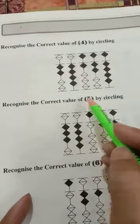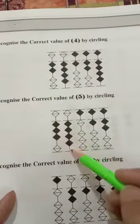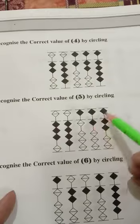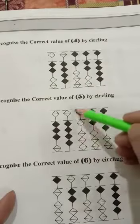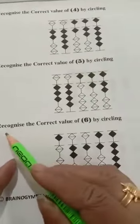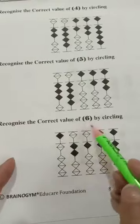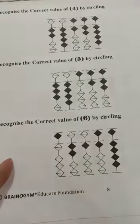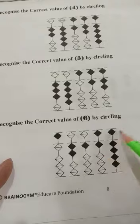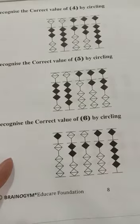Now the correct value of 5. This one is 3, 4, 5, 6 and 7. Then you circle the 5. Recognize the correct value of 6. That means 5, 2, 1, 6 and 9. Then you circle the 6.